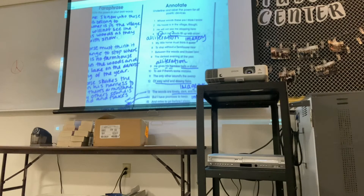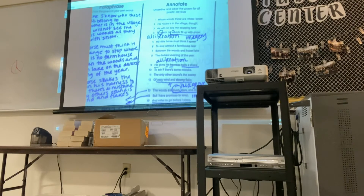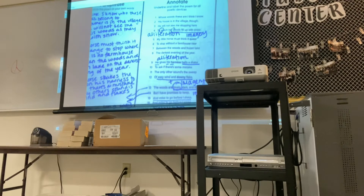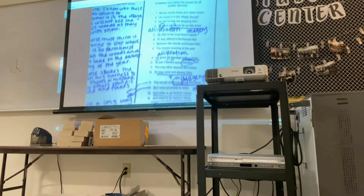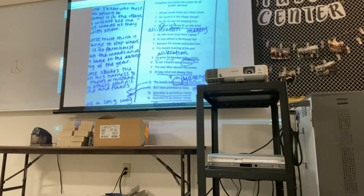We also have alliteration. Remember what alliteration is — like 'seashells by the seashore.' For example, line four has the repetition of the letter W — that's an example of alliteration. Line nine also: 'he gives his harness' — alliteration again. We also have words with positive connotations — for example, the word 'lovely' has a positive connotation. And then words like 'mistake' and 'dark' tend to have a negative connotation.